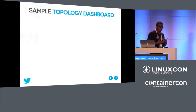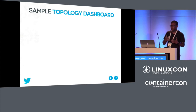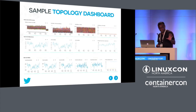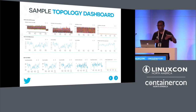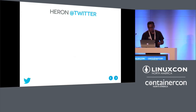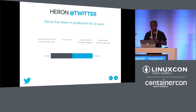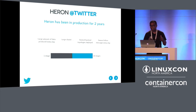The metrics manager collects over 200 metrics per topology, displayed on a dashboard for troubleshooting. Officially, Heron has been in production for two years. It processes a large amount of data and runs on a few thousand nodes in a multi-tenant cluster — containerized on Mesos/Aurora — with a container-equivalent footprint of a few thousand machines.